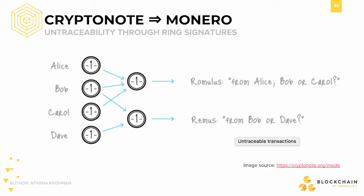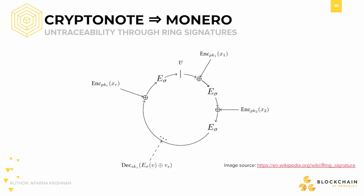And at the bottom here, the same situation: Bob wants to send a transaction to Remus, so he makes a ring signature with Dave's public key. In these two scenarios, both Romulus and Remus have no idea where these transactions originated from, and can only guess from their respective anonymity sets — those whose identities were involved in constructing their respective ring signatures. As a quick aside, the reason why it's called a ring signature is the ring-like structure of the signature algorithm, each of the incoming arrows being data encrypted by various users' public keys.